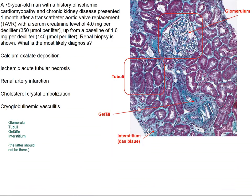This New England Journal case is a kidney biopsy from a 79-year-old patient who has ischemic cardiomyopathy and chronic kidney disease. He's exposed to a transcatheter aortic valve replacement, and subsequently his renal function declines further. In kidney biopsies, there are four things we look at: the filters, the glomeruli, the tubules, blood vessels, and the interstitium.